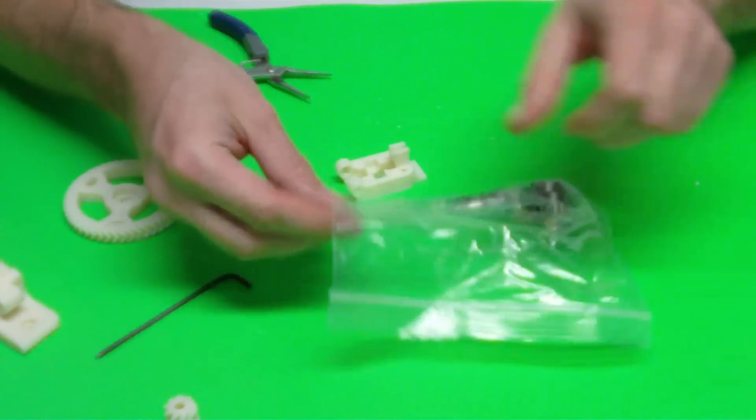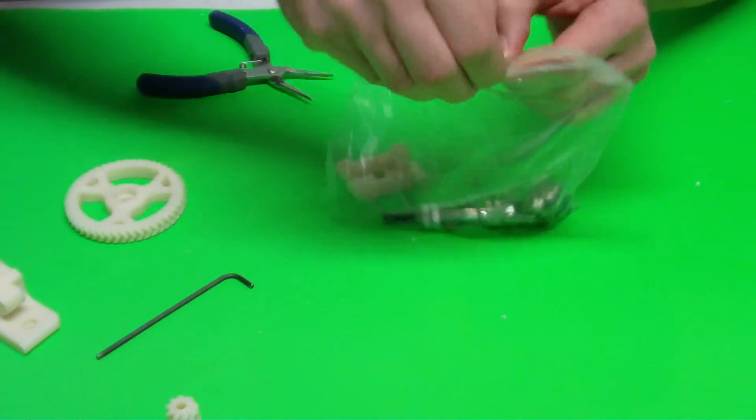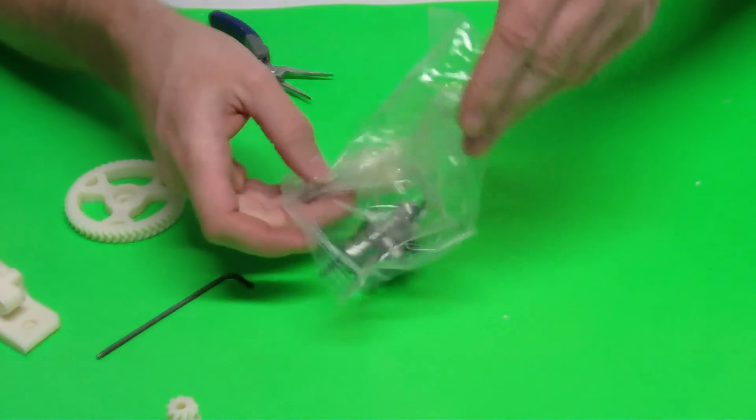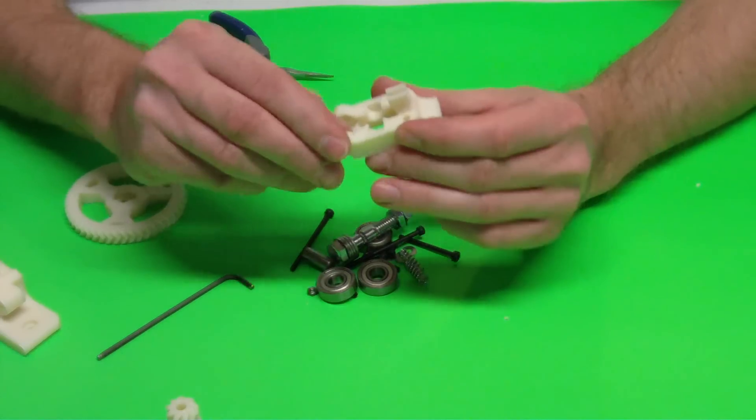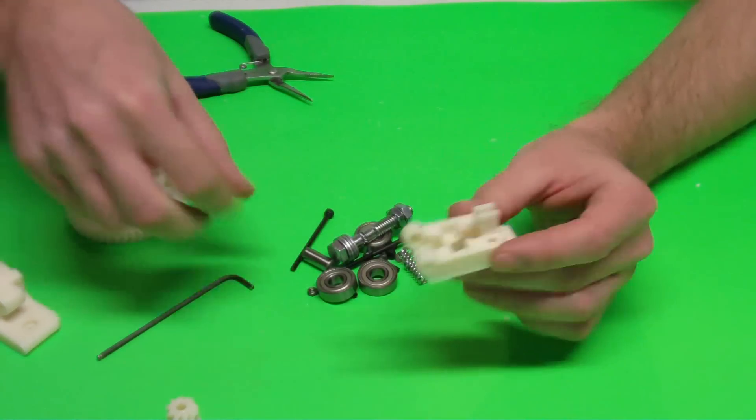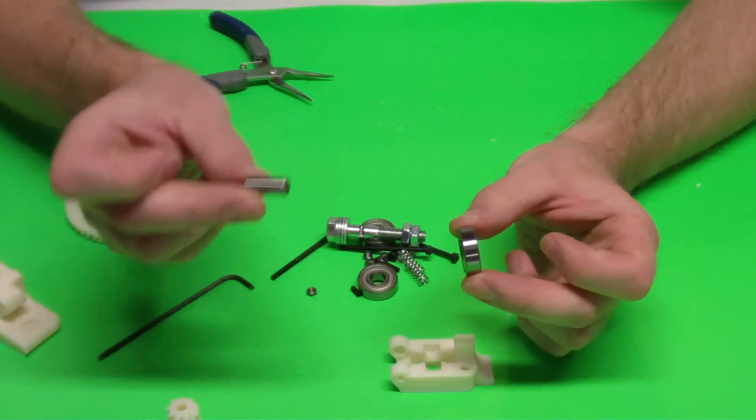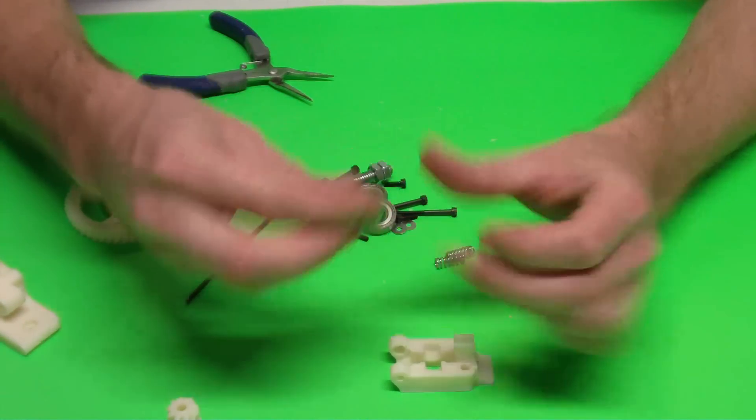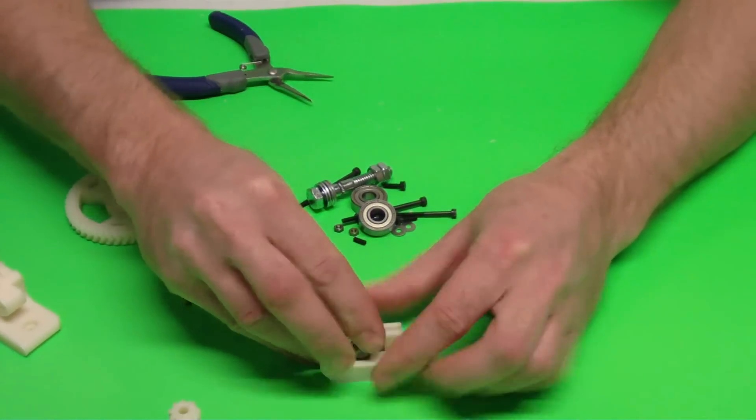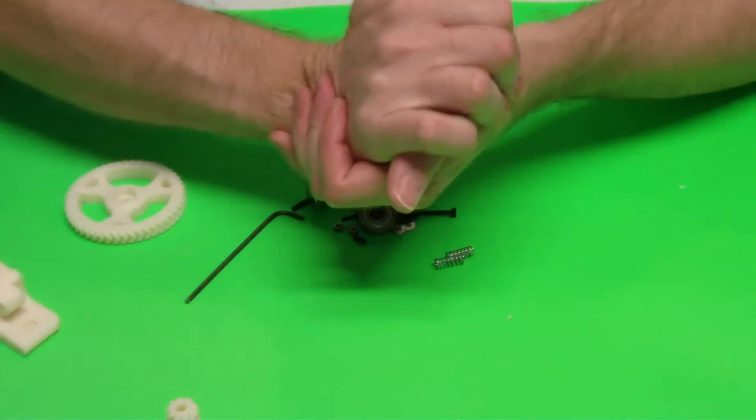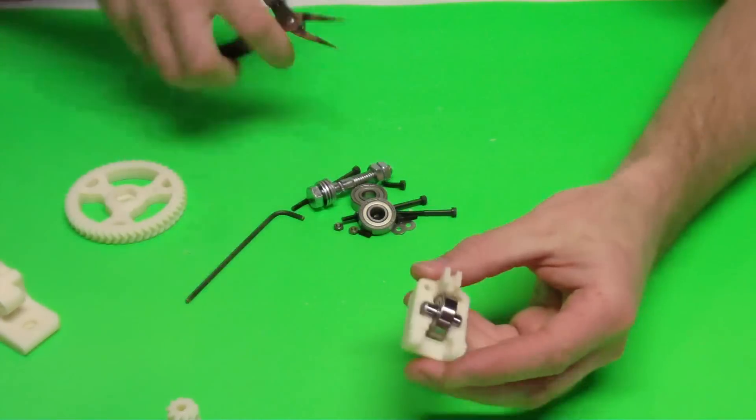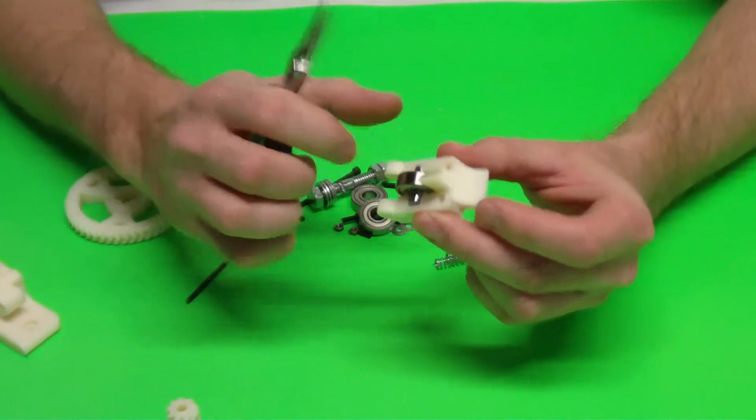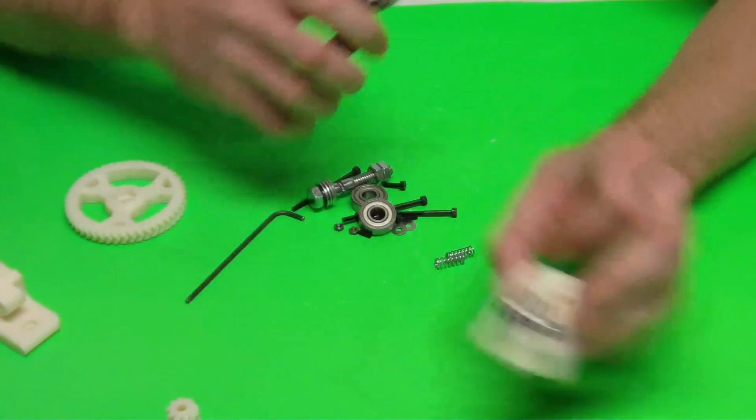Next thing we're going to do is get our hardware bag. I'm going to dump this out and start putting it together. First thing we're going to get is our extruder idler. We're going to get a 608 bearing and then our little dowel pin. If you put the dowel pin in there, line it up with your idler, and then just shove it in there. You may have to use a set of pliers, push it down all the way. And that's it. Now our idler is put together.